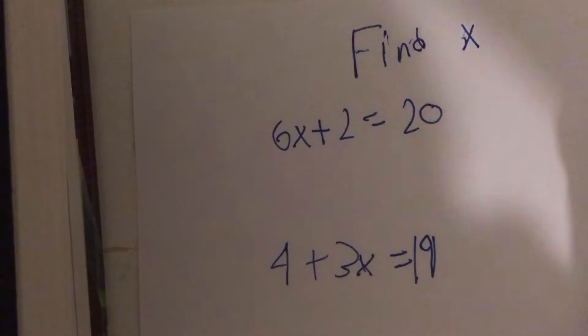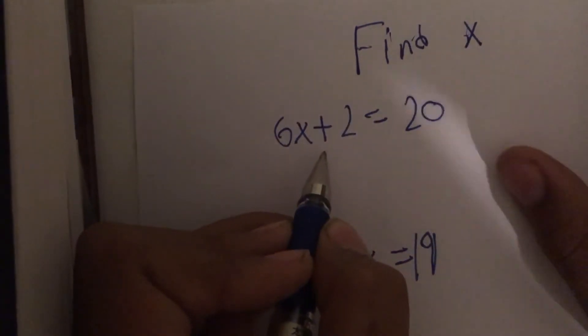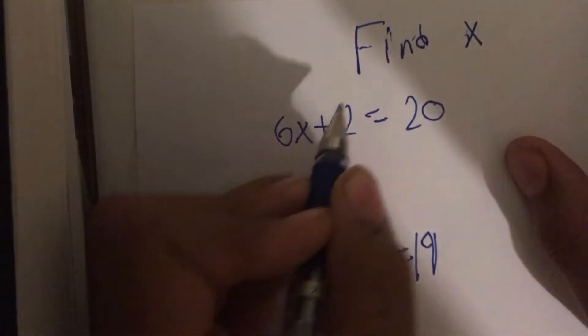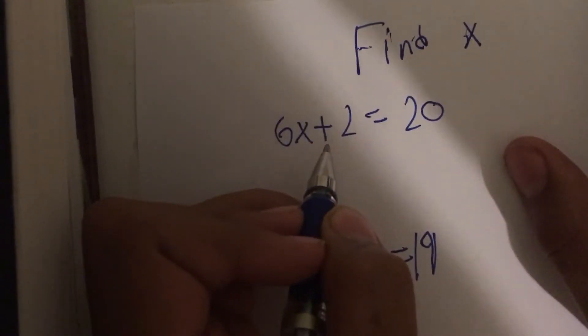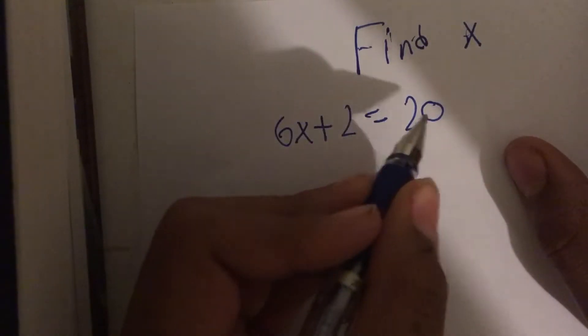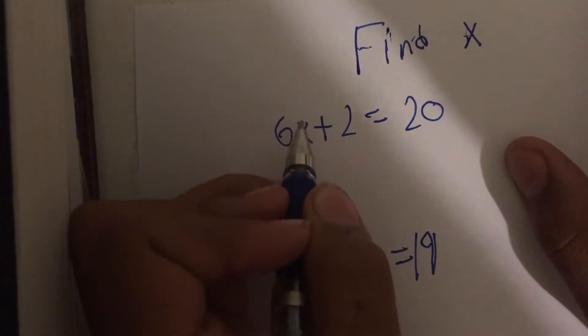What do we want to do to find x? Well, the first thing you're going to want to do is take this number right here, since it's not a variable, and put it on the other side so you only have your x value.